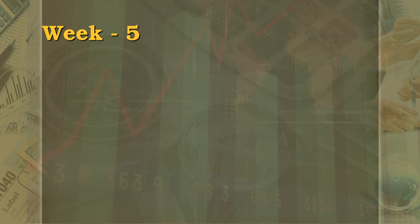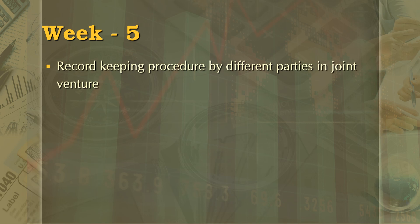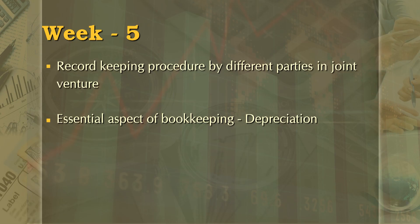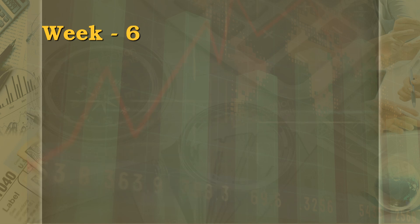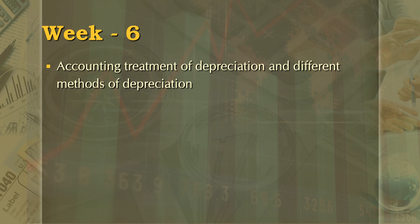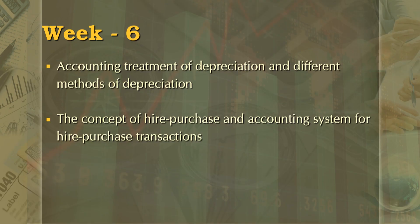Week 5 will continue with record-keeping procedures by different parties in joint venture. The second half of the week will open up with a new topic — depreciation — which is not directly part of accounting procedure but is an essential aspect of bookkeeping. Under this, you will be taught the meaning of depreciation, causes and factors affecting depreciation. Week 6 will commence with accounting treatment of depreciation and different methods of depreciation. The second half of week 6 will deal with the concept of hire purchase and the accounting system for hire purchase transactions.